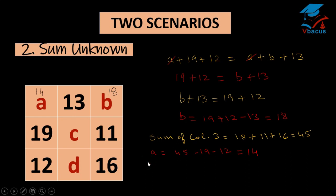Now find the value of C. Sum is 45. So we can find 45 minus 19 minus 11 that is 15. So value of C is 15. Now find the value of D. Value of D is 45 minus 13 minus 15 that is 17.